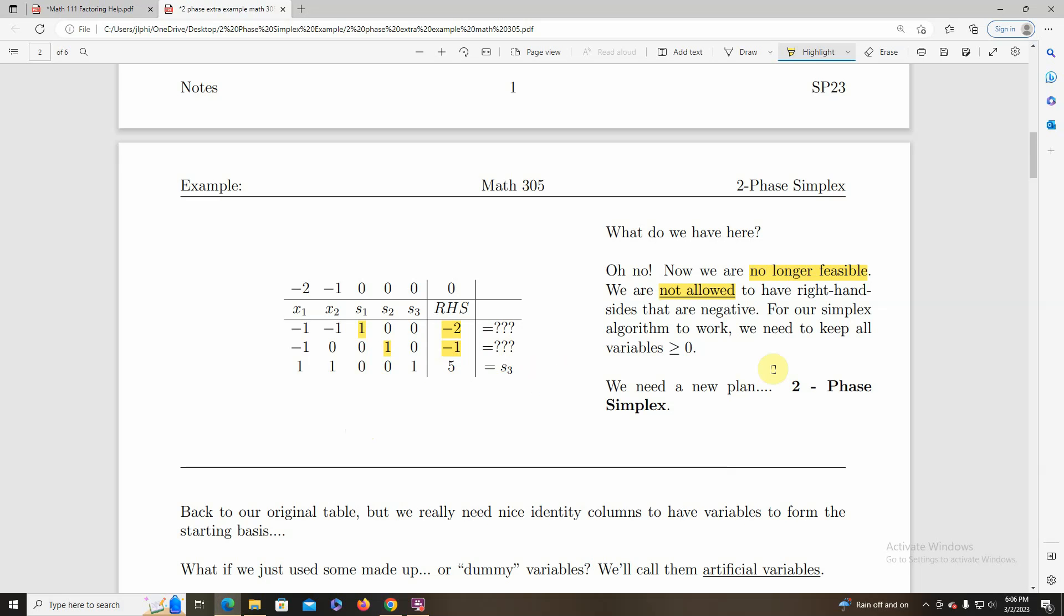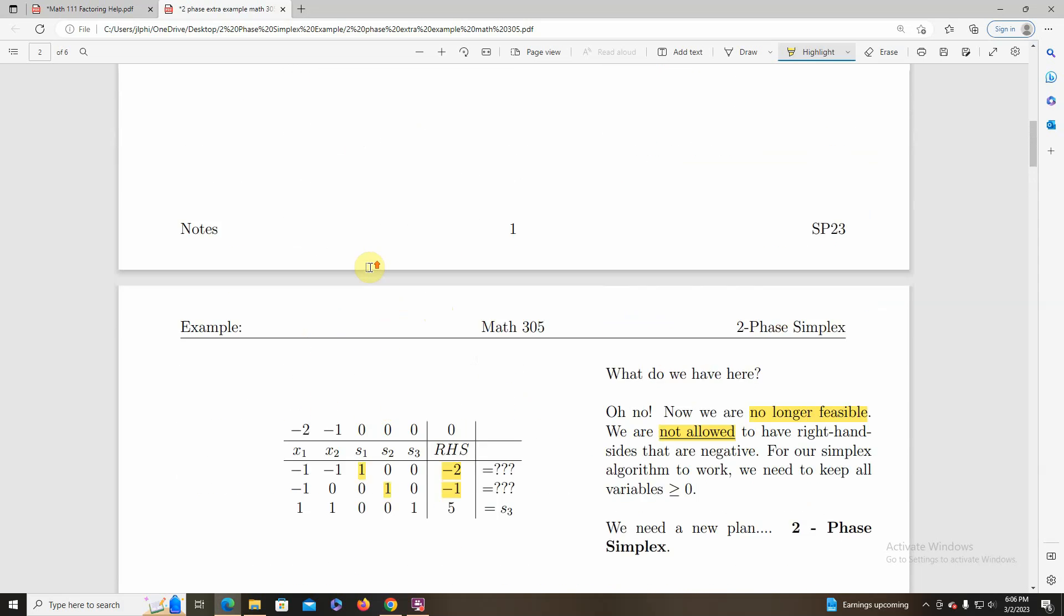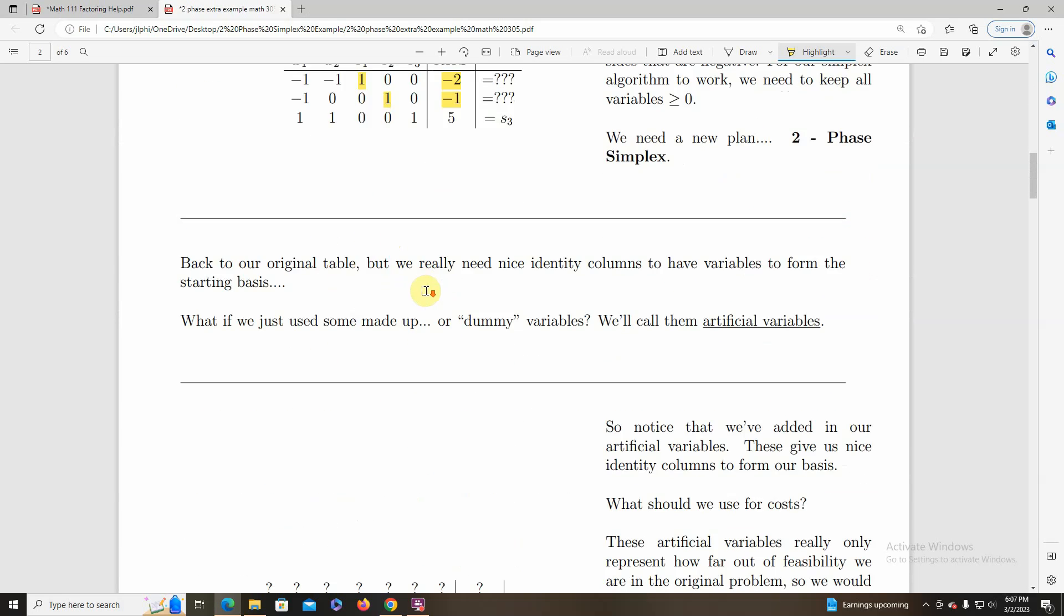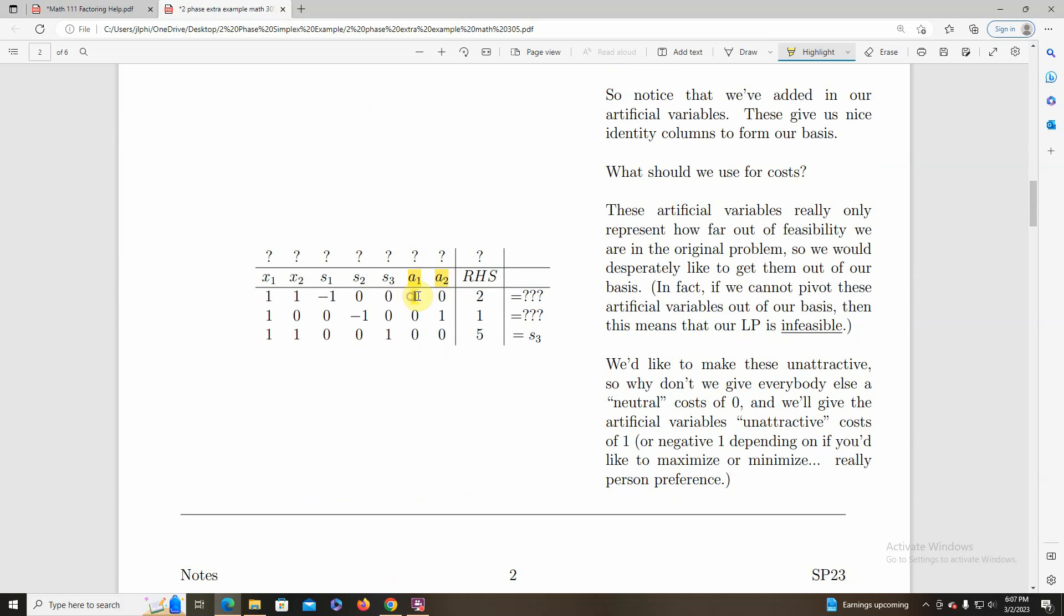So here's the idea. Let's go back to this original table here. I would really love to have an identity column that had a positive one in it. Just all zeros and a one to take up this value of two. And I just don't have it anywhere. So what if I were to just introduce dummy variables, or what we will call artificial variables? They don't really have any meaning to the original problem, besides just whether we are... Basically, they're measuring how far out of feasibility we are. But if we can put those artificial variables in, that would give us at least something to start with. So we add these artificial variables. And that's lovely. They can take these values for us. But now that I've added these weird dummy variables to the problem, I'm not quite sure what to make the cost.